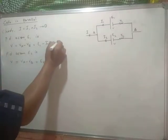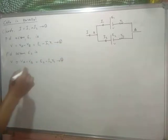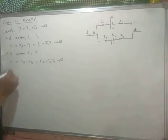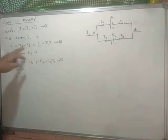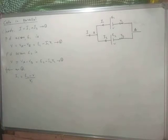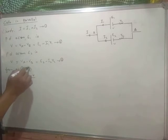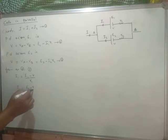Let me find out I1 from equation 2 and I2 from equation 3. From equation 2, I1 equals E1 minus V upon R1. Similarly, from equation 3, I2 equals E2 minus V upon R2. These are the equations for the currents.